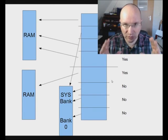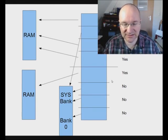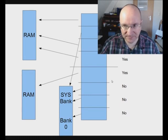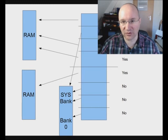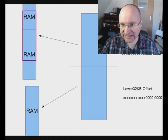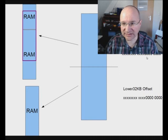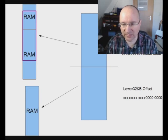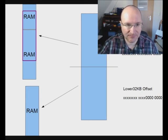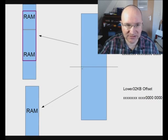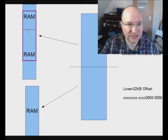As you can see, you can already view parts of three different banks simultaneously. It gets a little more complex: in the offset, only the last 8 bits are fixed, meaning the memory is not aligned to a 64-kilobyte boundary. So the 32-kilobyte block can overlap between two banks.